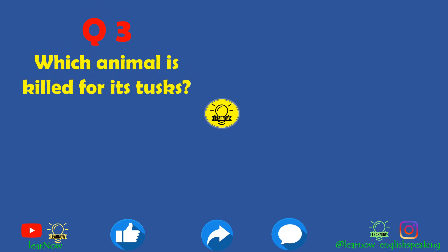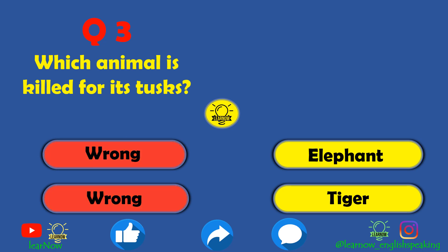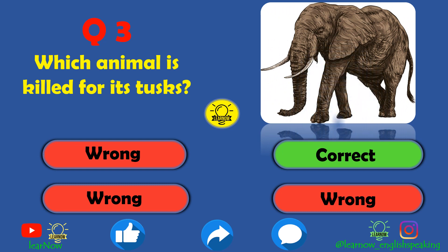Next question: which animal is killed for its tusks? Snake and deer are wrong; tiger does not have tusks. Elephants are killed for their tusks. Hunters illegally hunt elephants for their tusks.